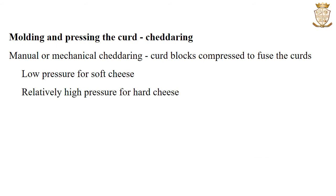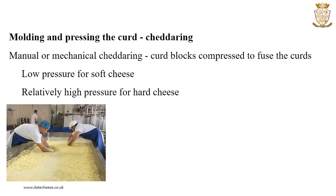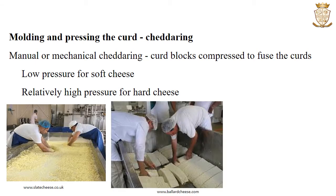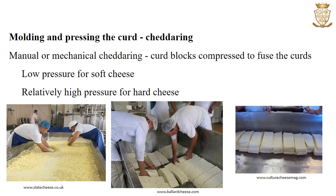The next step is the moulding and pressing of the curd, also known as cheddaring. Manual or mechanical cheddaring is done where the curd blocks are piled up to compress and fuse the curds, expelling more whey. This is done at low pressure for soft cheese or relatively high pressure for hard cheese. At the end of cheddaring, the curd has a characteristic fibrous appearance.